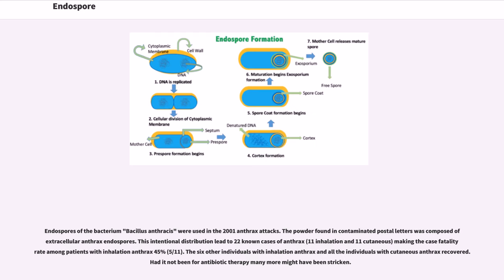Endospores of the bacterium Bacillus anthracis were used in the 2001 anthrax attacks. The powder found in contaminated postal letters was composed of extracellular anthrax endospores. This intentional distribution led to 22 known cases of anthrax making the case fatality rate among patients with inhalation anthrax 45%. The six other individuals with inhalation anthrax and all the individuals with cutaneous anthrax recovered. Had it not been for antibiotic therapy many more might have been stricken.